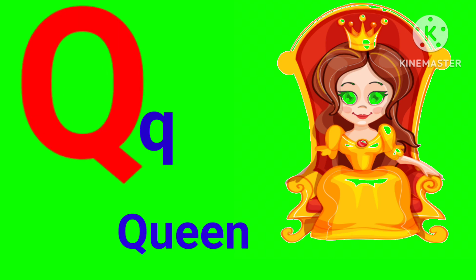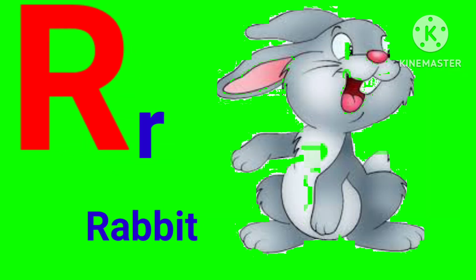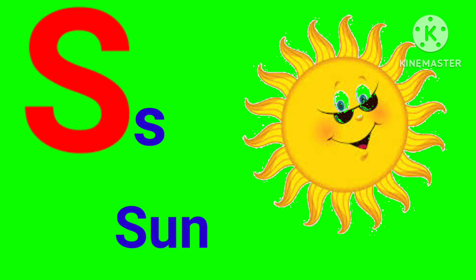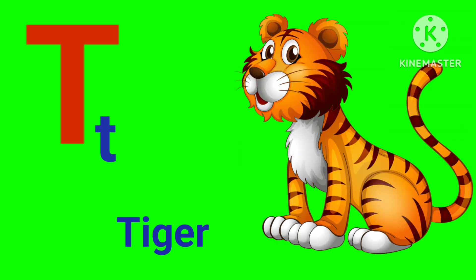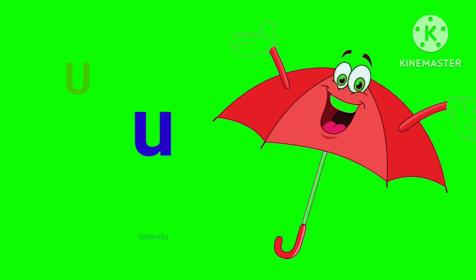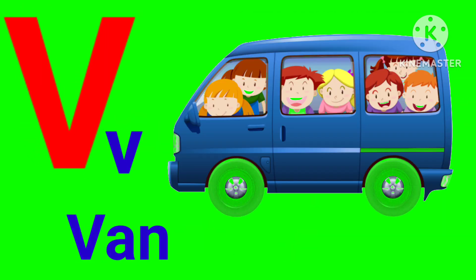Q for queen, R for rabbit, S for sun, T for tiger, U for umbrella, V for van.